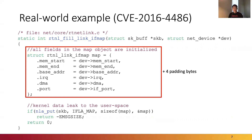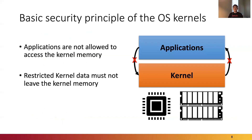This type of vulnerability violates the basic security principle of operating system kernels. Applications are not permitted by the processor to address kernel memory, preventing an application from damaging the kernel. Also, any data inside the kernel must not be copied to applications. This fundamental partition of memory space has contributed to the current designs of operating system kernels. Information leaks caused by uninitialized stack variables break this principle.